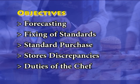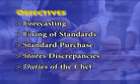Objectives. In this episode, the following aspects of production control are going to be discussed: forecasting, fixing of standards, standard purchase, stores discrepancies, and duties of the chef.